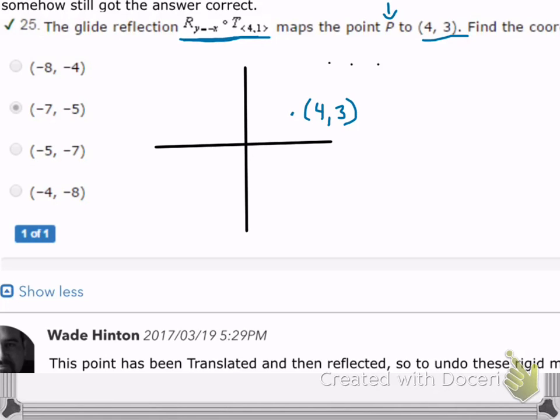So what we want to do then is to do these two transformations in reverse. The first thing that they did was to move it right 4 and up 1, and then they reflected it across the line y equals negative x. So we're going to do that in the exact opposite order. We're going to first reflect it across y equals negative x, and then we're going to do the translation in reverse. So instead of moving it right 4 and up 1, we're going to move it left 4 and down 1.